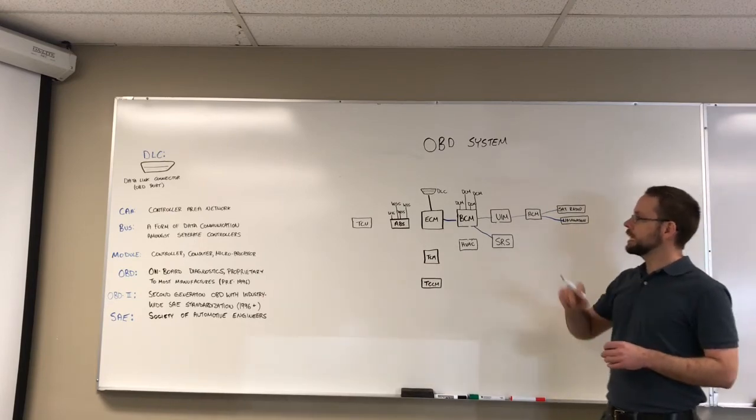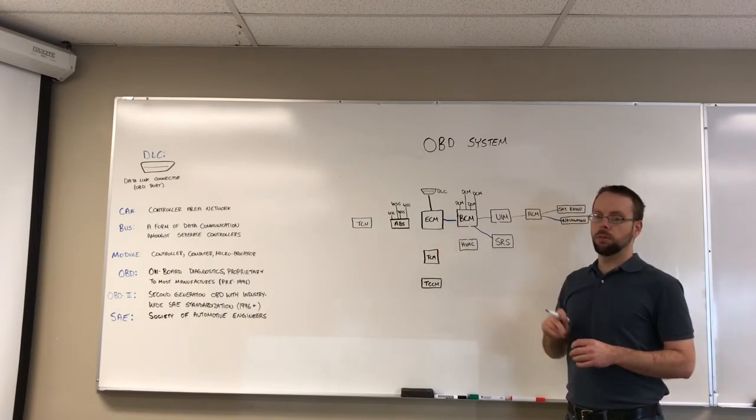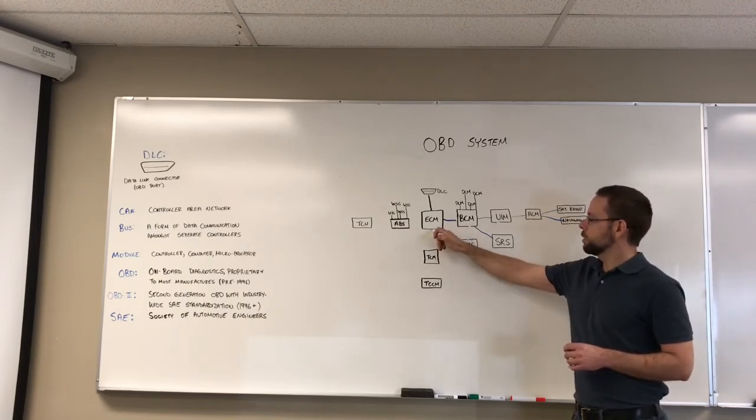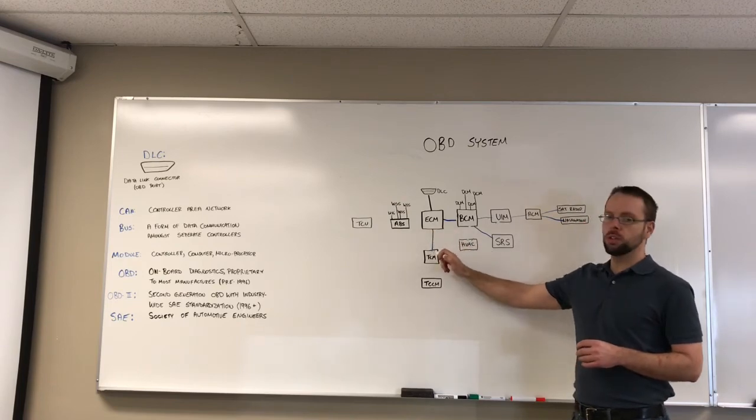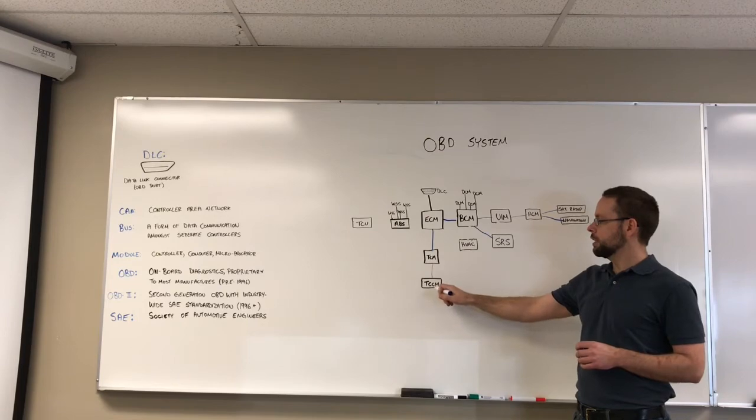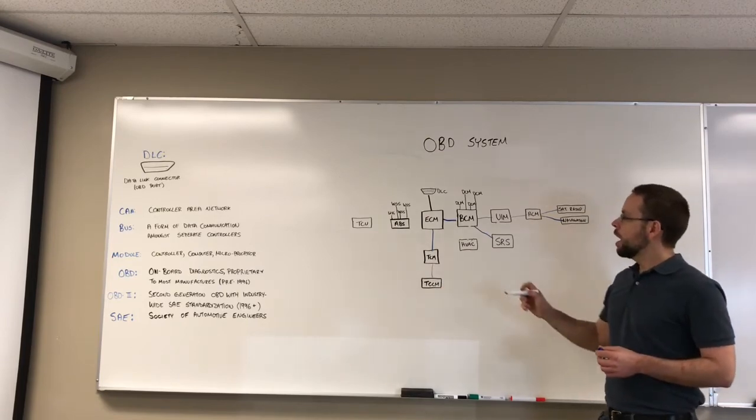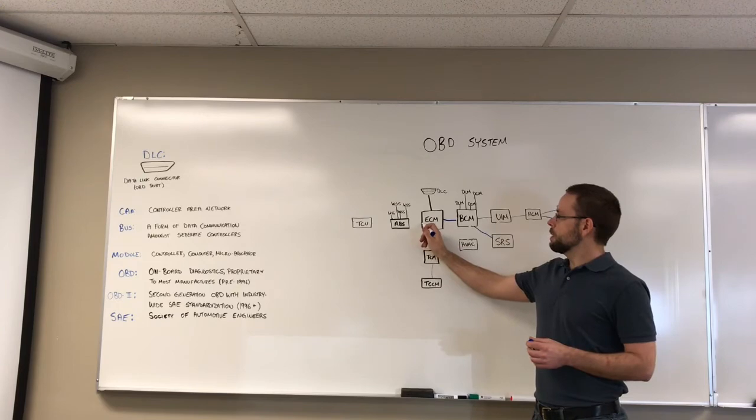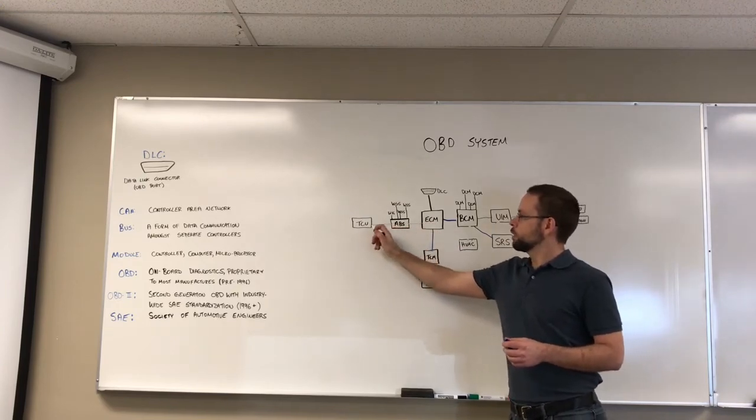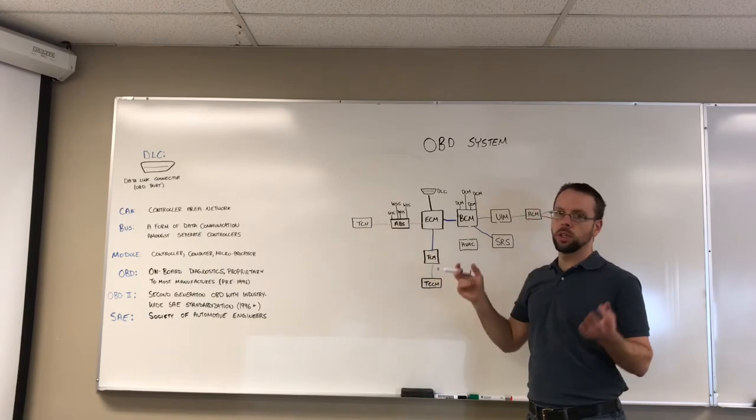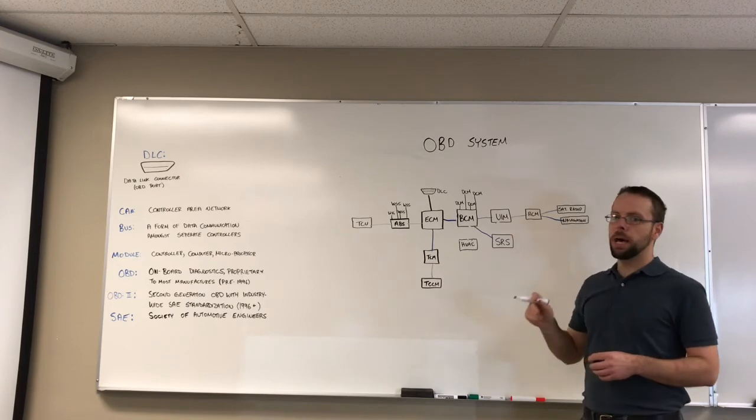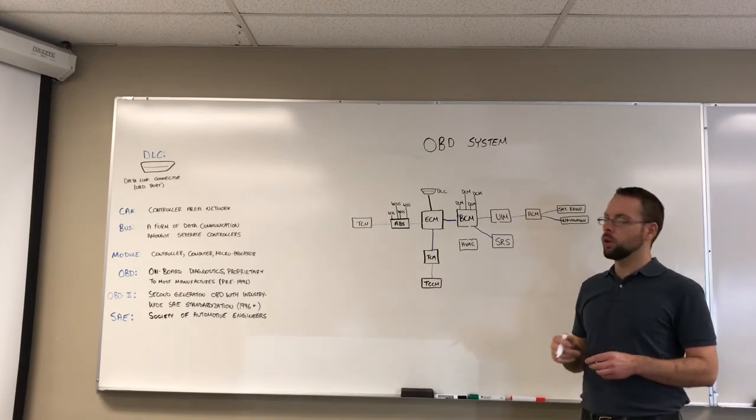On the side of the ECM, the ECM is going to have a whole bunch of different modules they control. So the ECM may control a TCM transmission control module which then in turn may also control a TCCM transfer case control module. Then there's also a separate ABS module for the brake system and then there could be another one for the traction control, so traction control unit perhaps. But amongst all of these modules and communication there's going to be sub items so sensors and such that go with it.